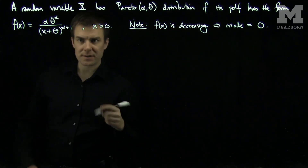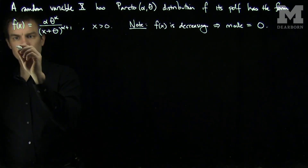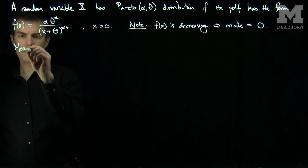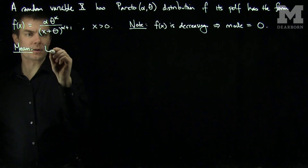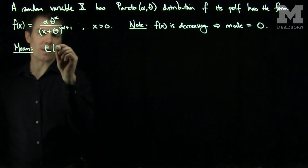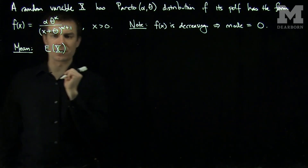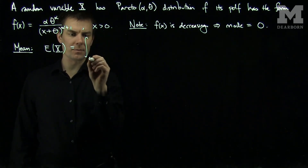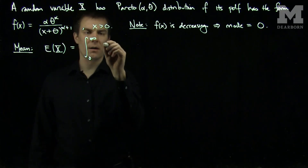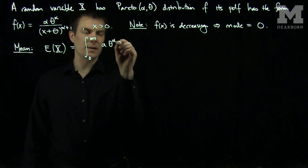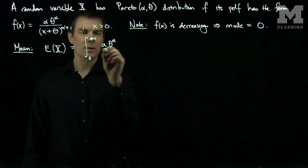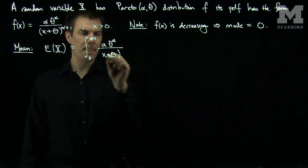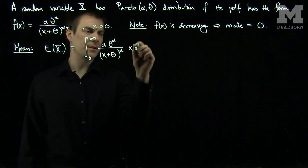Let's next compute the mean. So the expected value of a random variable X with this Pareto distribution will be found by doing the integral from 0 to infinity of alpha theta to the alpha over x plus theta to the alpha plus 1, times x dx.